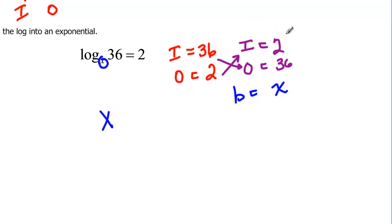So we have our base of x, our input, in the purple over here, in the exponent, is the 2, and then it's equal to our output, which is 36.